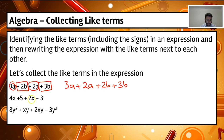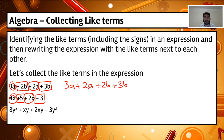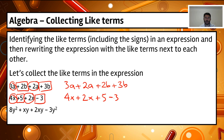Next: 4x plus 5 plus 2x minus 3. Can we see the like terms? We've got 4x and plus 2x — they're the same power. And then the plus 5 and the minus 3 are also like terms, because constant terms are also like terms. So if we bring those together we've got 4x plus 2x, plus 5 minus 3.